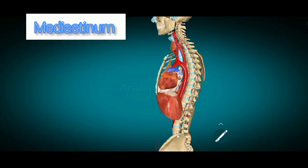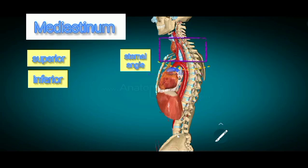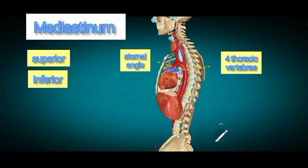The mediastinum is divided into superior and inferior mediastinum by the presence of an imaginary line that passes from the sternal angle anteriorly to the lower border of the fourth thoracic vertebra.